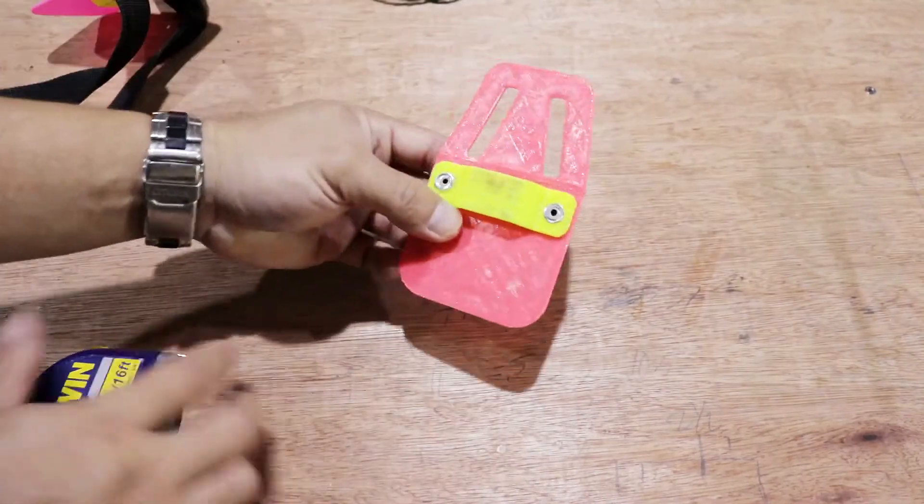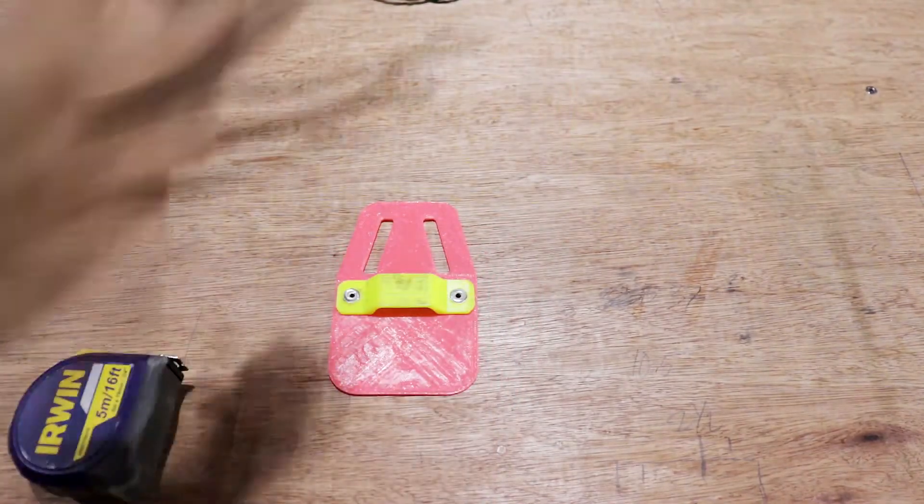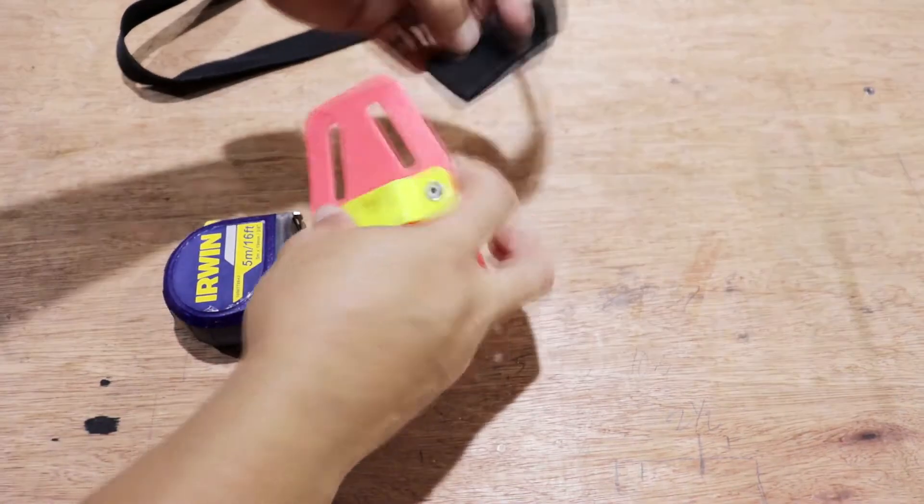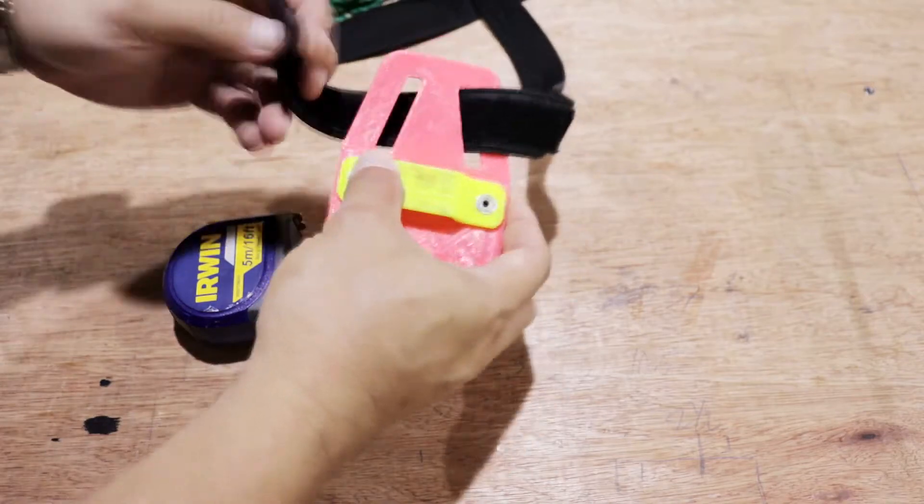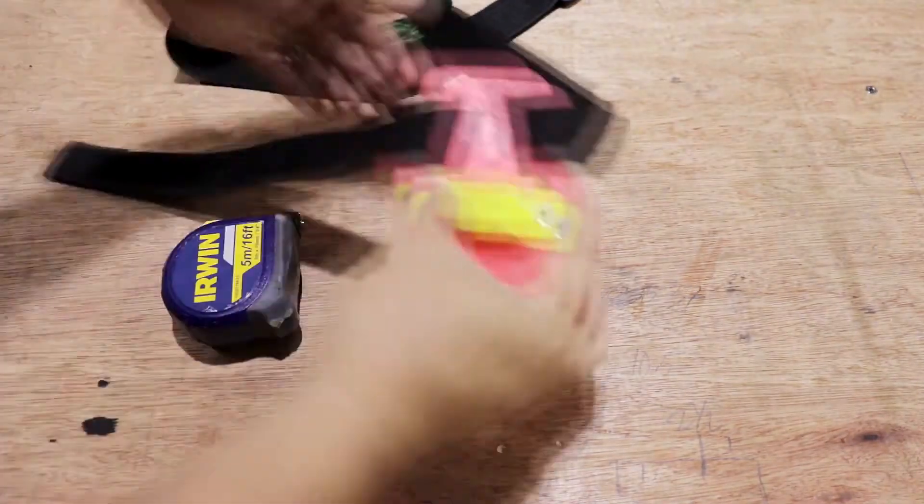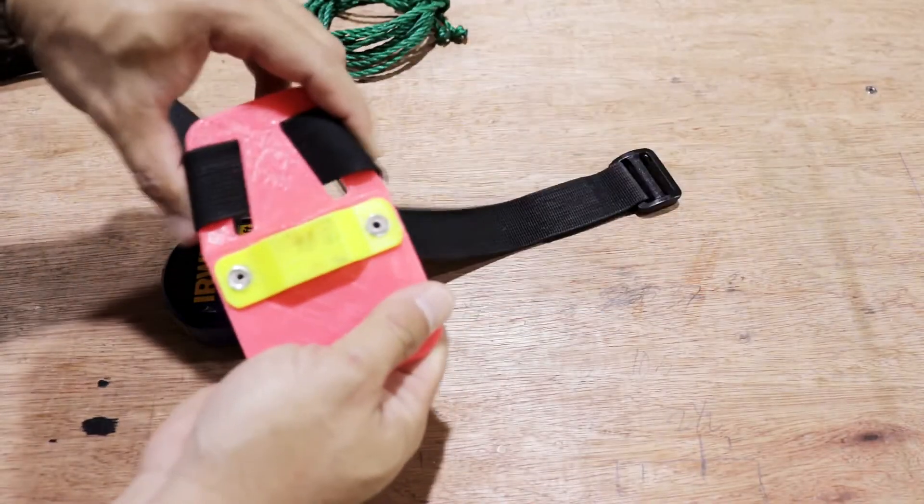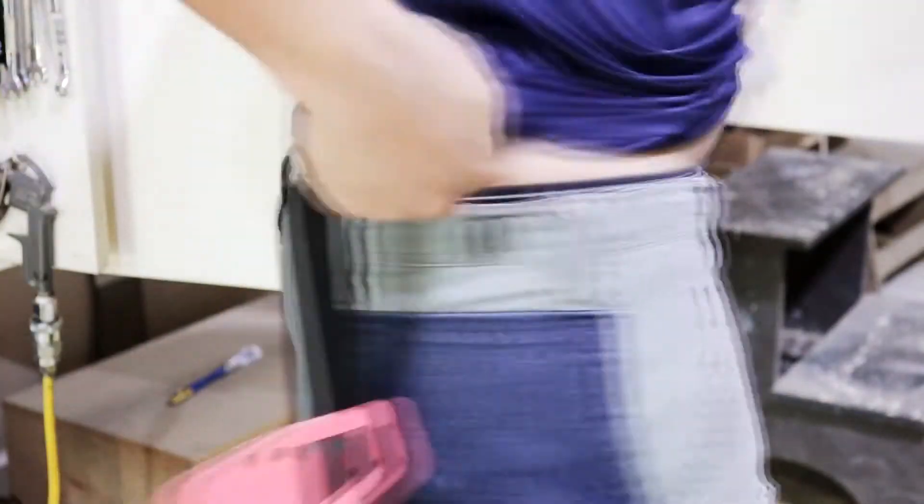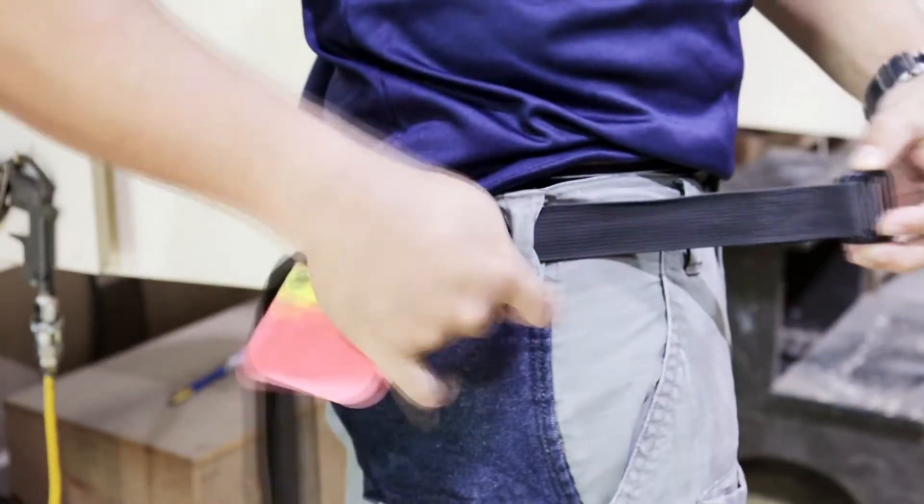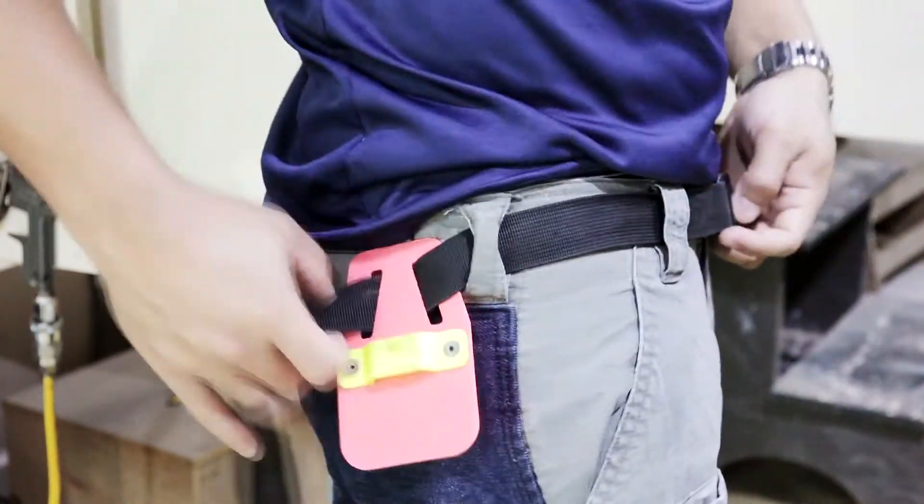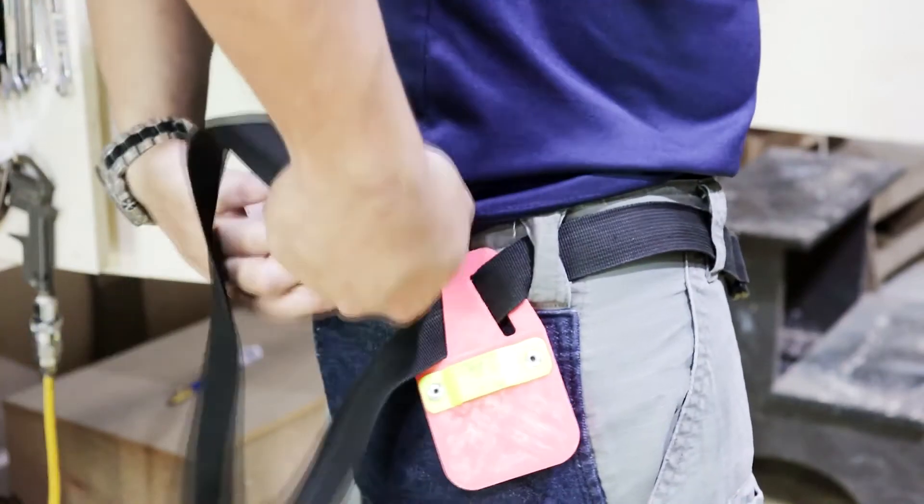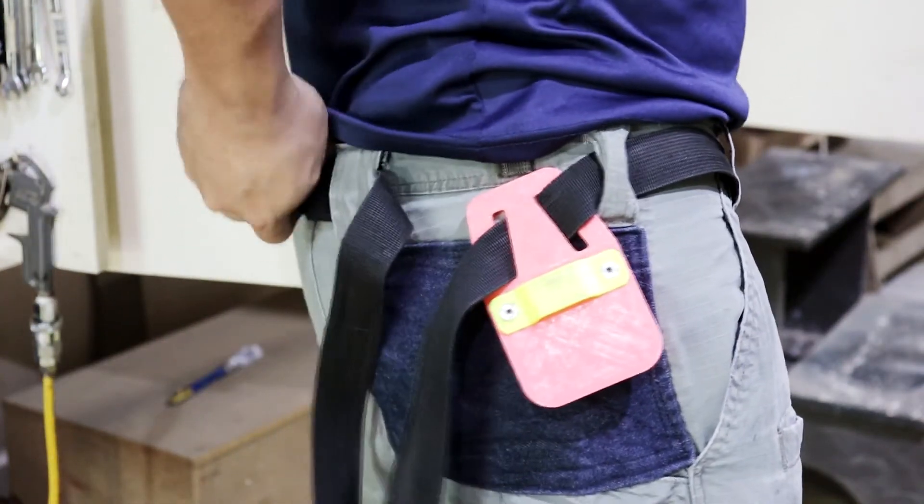This attaches to the belt this way. Insert the belt like shown in the video. I always attach this first before wearing my belt because it is easier this way. We all have our preference to where to place our tape measure. I placed mine on the rear right side. This way it is not in the way every time I am doing something.